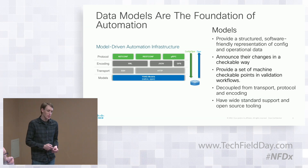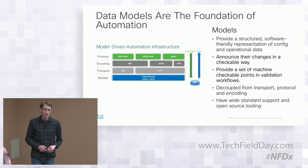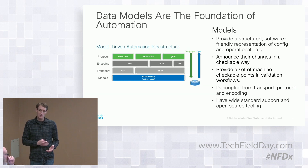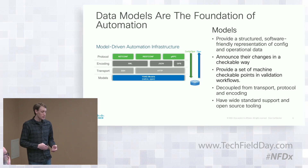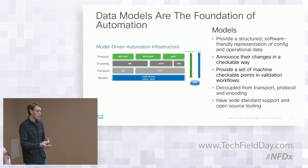Data models are really the foundation of what we're doing with automation. The key point is providing a structured, software-friendly representation of both config and state data — and many times through the same model. My configuration basically matches the operational data I'm getting from the device through the same model. In some cases there are different config models from operational state models, but they're easy to compare versus before, where an SNMP string really had sometimes very little to do with the actual configuration of the device. The model-driven way makes correlating those two things much easier.